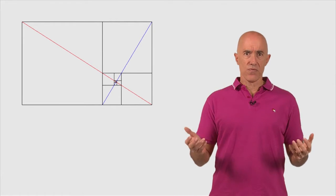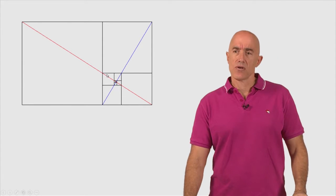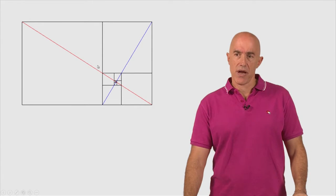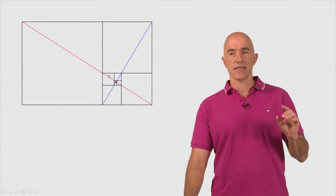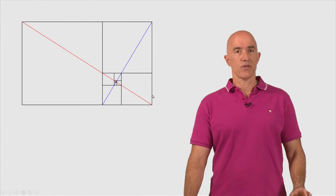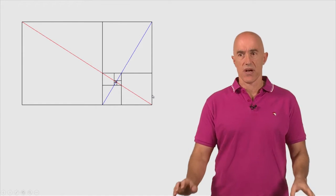How can you prove that? Well, you look at this middle square rectangle here. This is also a golden rectangle and in fact it's an exact copy of the outer golden rectangle, just reduced in size.